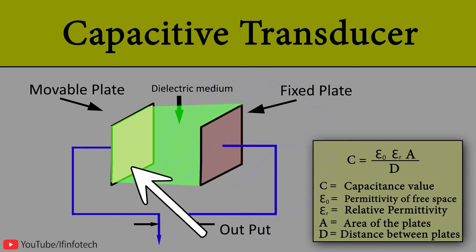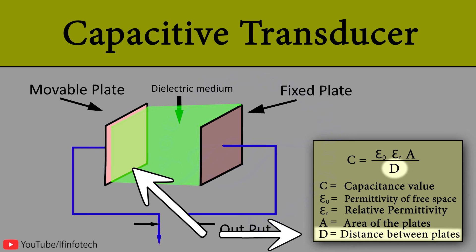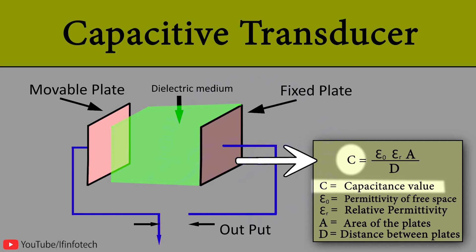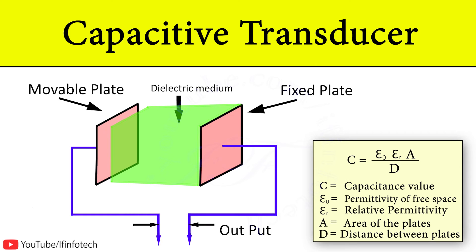When the plates are moving, the distance is varied and this results in changing of capacitance value. It requires external power to operate. In this way we can measure displacement with the help of capacitive transducer.